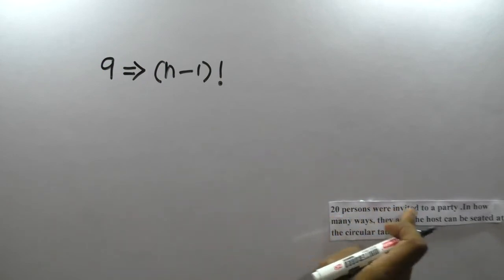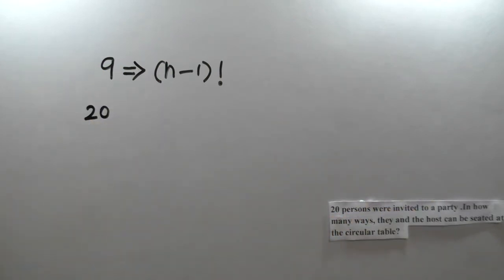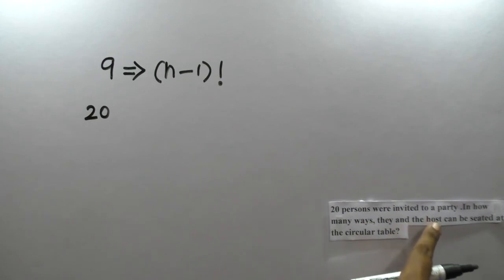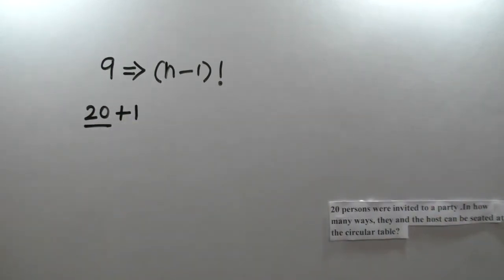20 persons were invited to the party. In how many ways can they - they are 20, and the host - that's one more. So 20 persons plus the host can be seated at the circular table.